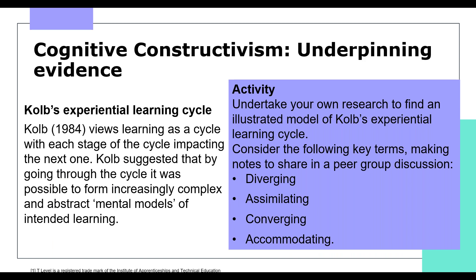Next, we have Kolb's experiential learning cycle, which views learning as a cycle where each stage impacts the next. Kolb suggested that by going through the cycle it was possible to form increasingly complex and abstract mental models. Effective learning develops through four stages: having a concrete experience, observation and reflection on that experience, analysis and conclusions, and testing a hypothesis in future situations resulting in new experiences. Research an illustrated model and consider key terms: diverging, assimilating, converging and accommodating.